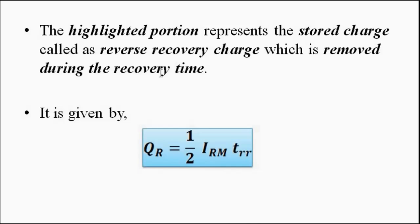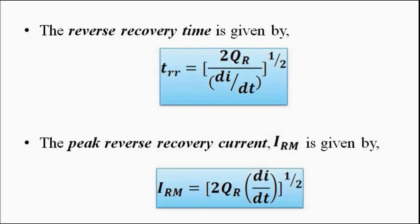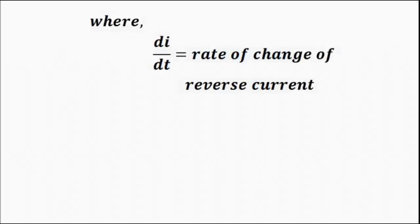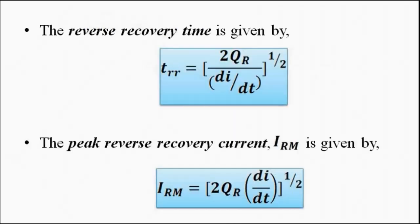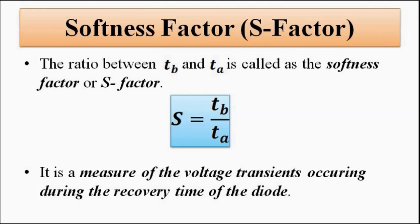The reverse recovery charge is removed during the recovery time when the diode conducts in the reverse direction. The reverse recovery time t_rr is given by: t_rr = (2 Q_r / (di/dt))^(1/2), where di/dt represents the rate of change of current in the reverse direction. The peak reverse recovery current I_RM is given by: I_RM = (2 Q_r × di/dt)^(1/2).